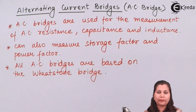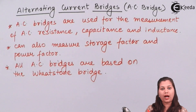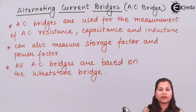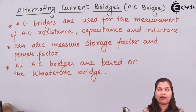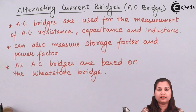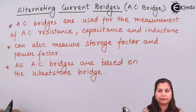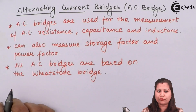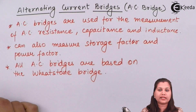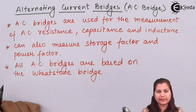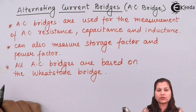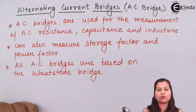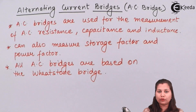Just like the Wheatstone bridge, which has four arms with four resistances connected, and a galvanometer in between that measures the null deflection and is used for balancing the bridge — here also in the AC bridges, we will have four arms. Instead of four resistances, we will have four impedances. One of the impedances will be unknown and all the other impedances will be known to us.